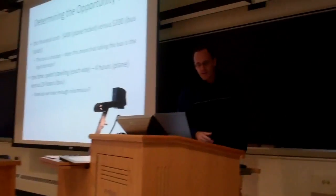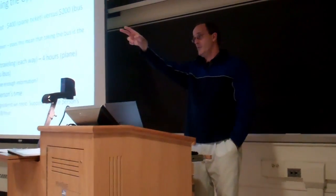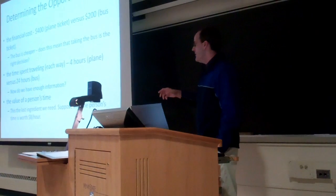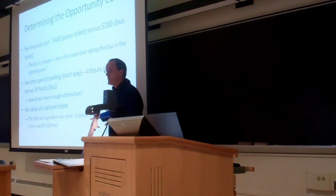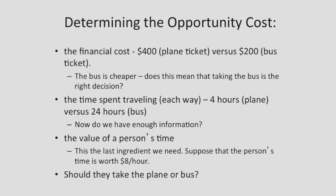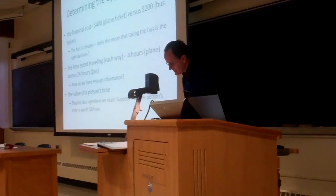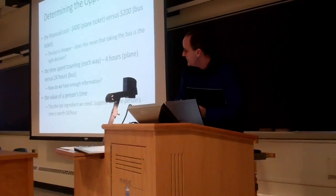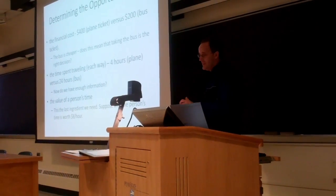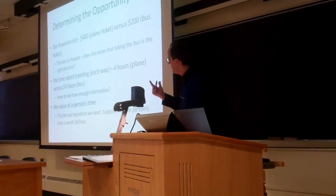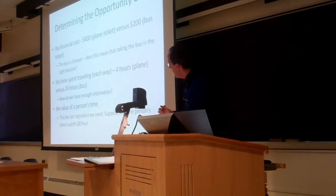There's a significant time difference here. Do we have enough information? No, we do not. What we need to know — and this is crucial — is the value of the person's time. Let's suppose that's $8 an hour. That's just an arbitrary value we can use to solve this problem. I'm going to head over to the document camera and plug in those pieces of information to solve it.